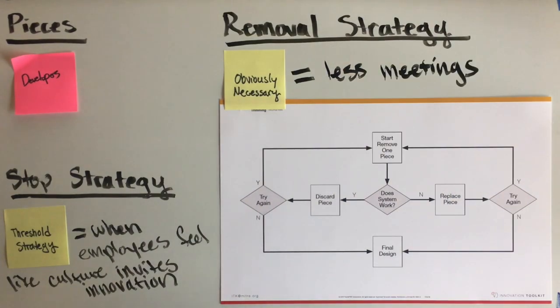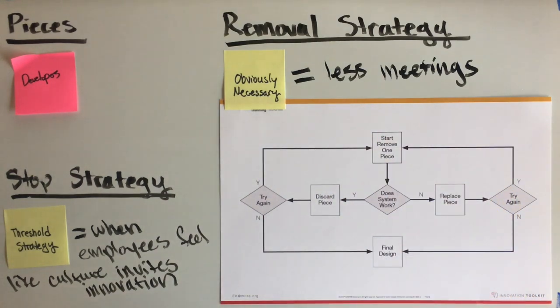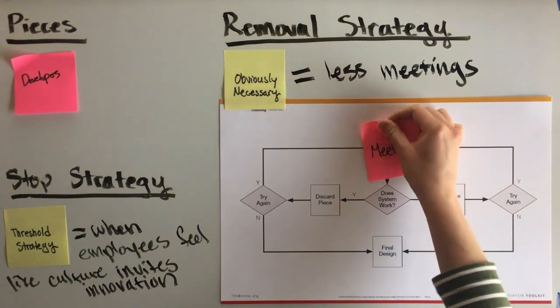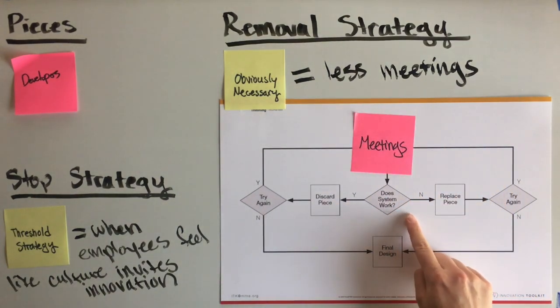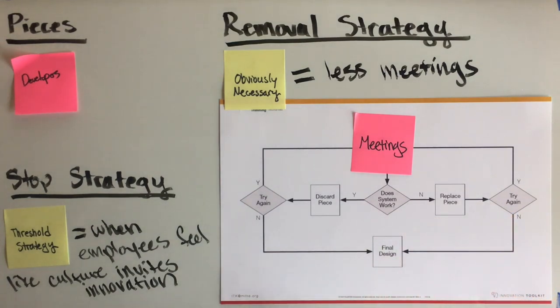Now that the pieces, stop strategy and removal strategy have been identified, begin the trimming process as illustrated on the template. Experiment by trimming a piece that matches your removal strategy. Does the system work without the piece? If so, discard that piece. If not, replace it. Repeat the process until the stop strategy applies.